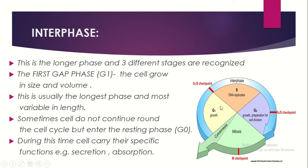The interphase has three stages: G1 growth, S phase where DNA replicates, and G2 growth preparation for cell division. The green portion represents mitosis, that is the M phase and cytokinesis, which together comprise the M phase. Interphase is the longest phase because it contains these three distinct stages.